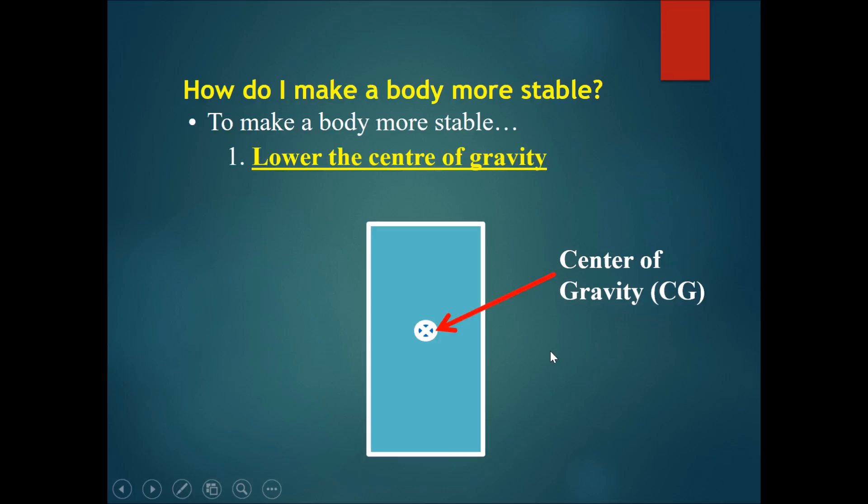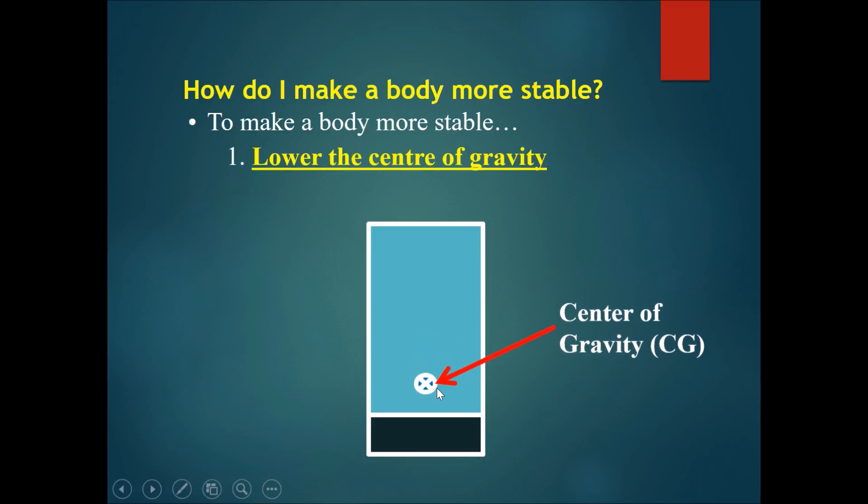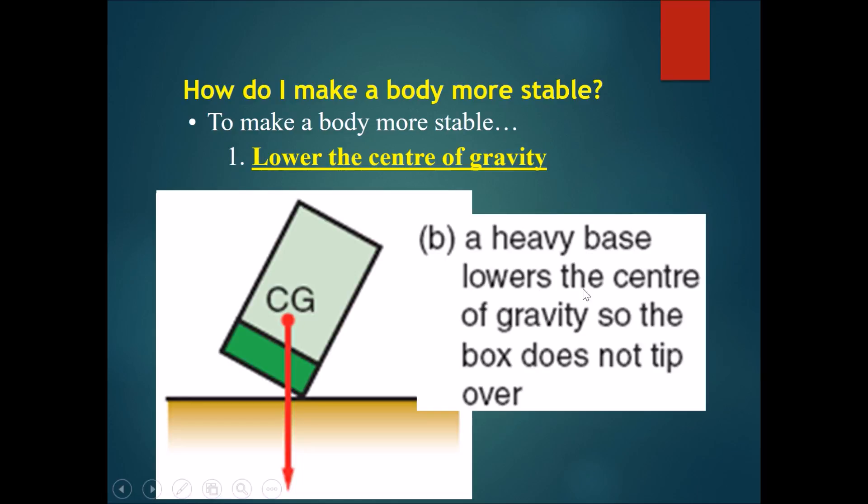The way to make the body more stable is to lower the center of gravity. For example, maybe if you add a heavy base to the object. If you add a heavy base to the object, the center of gravity will move towards the place that is heavier. A heavy base lowers the center of gravity such that the box does not tip over so easily.